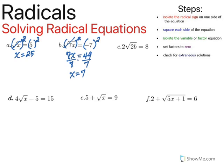Let's look at C. On this one, you can see that the radical symbol is not by itself — we have a two on the outside. So we need to start by moving the two. Because it's being multiplied to the radical symbol, we're going to divide to undo that operation. We're going to divide both sides by two. Once I do that, I'm left with the square root of 2b is equal to four.